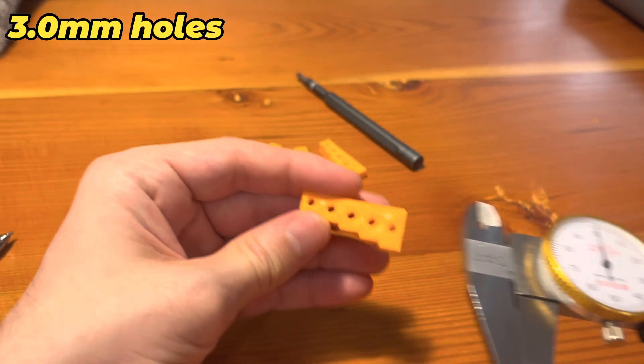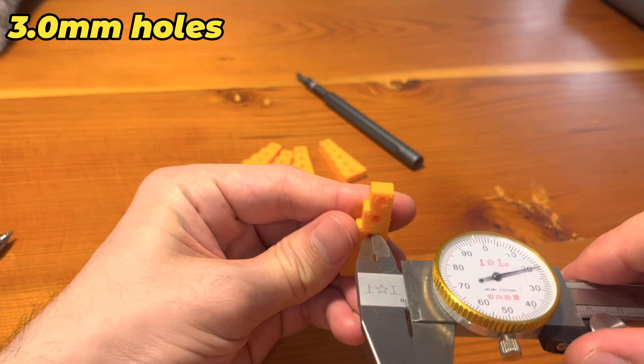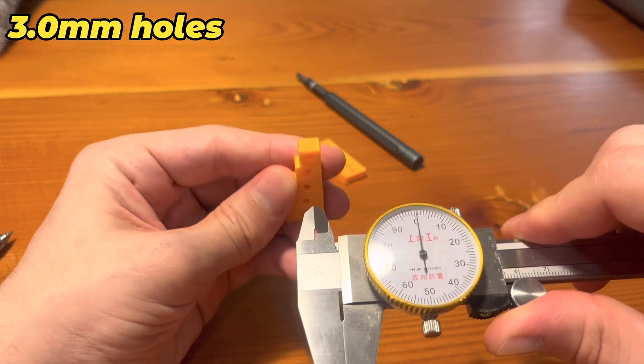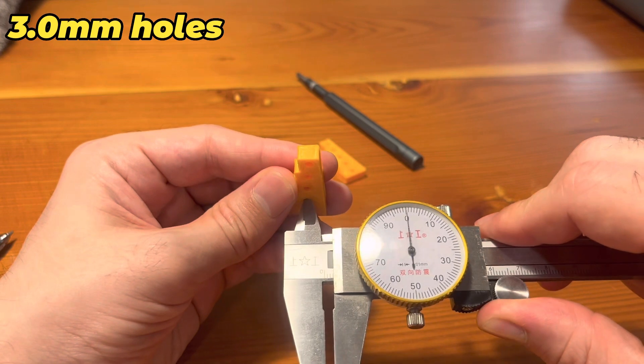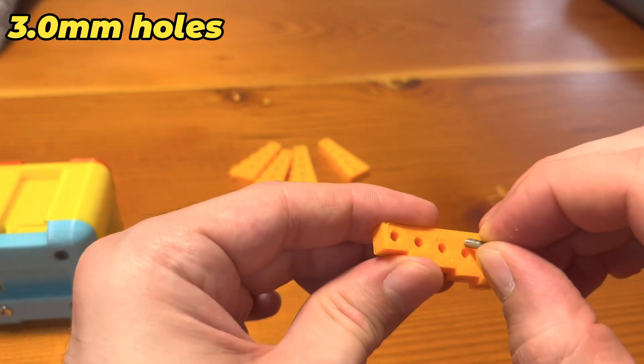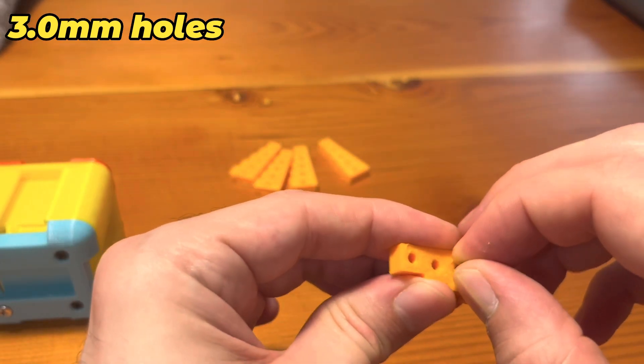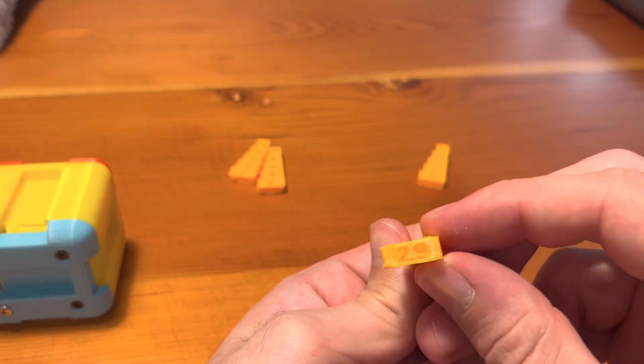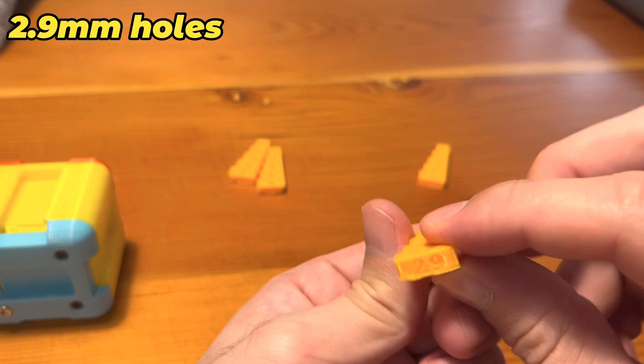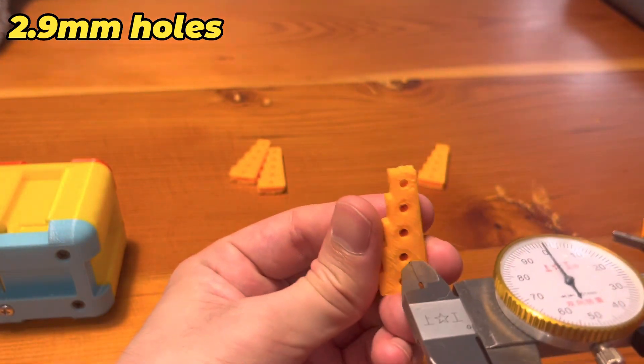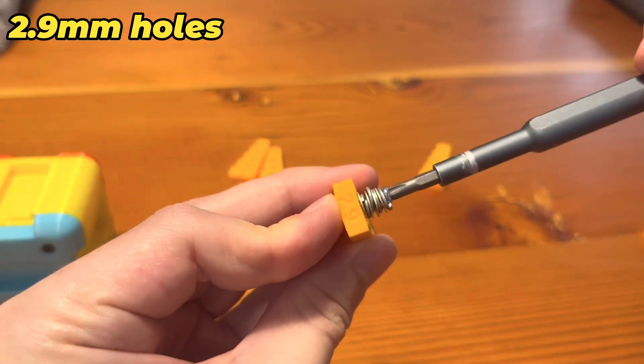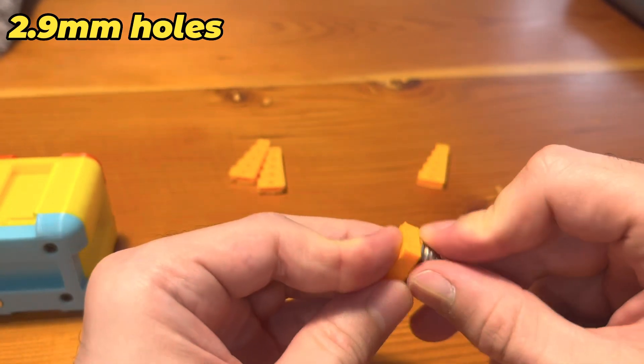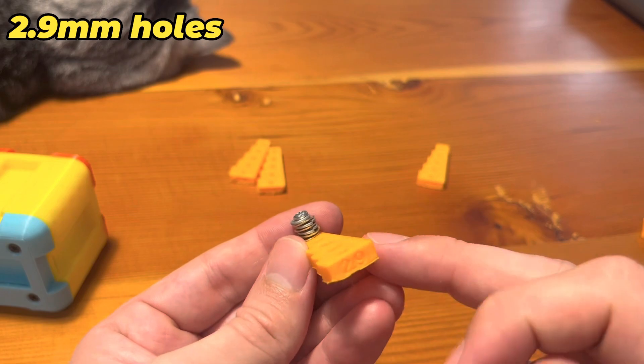We'll be starting with a 3 millimeter here. Right at 3 millimeter. At 3 millimeters, our screw just drops into the hole and doesn't grab at all. So this one fails the test. Next up, the 2.9 millimeter. The 2.9 millimeter hole is stripping out before it can even flatten the washers. So this one is going to be a fail too.